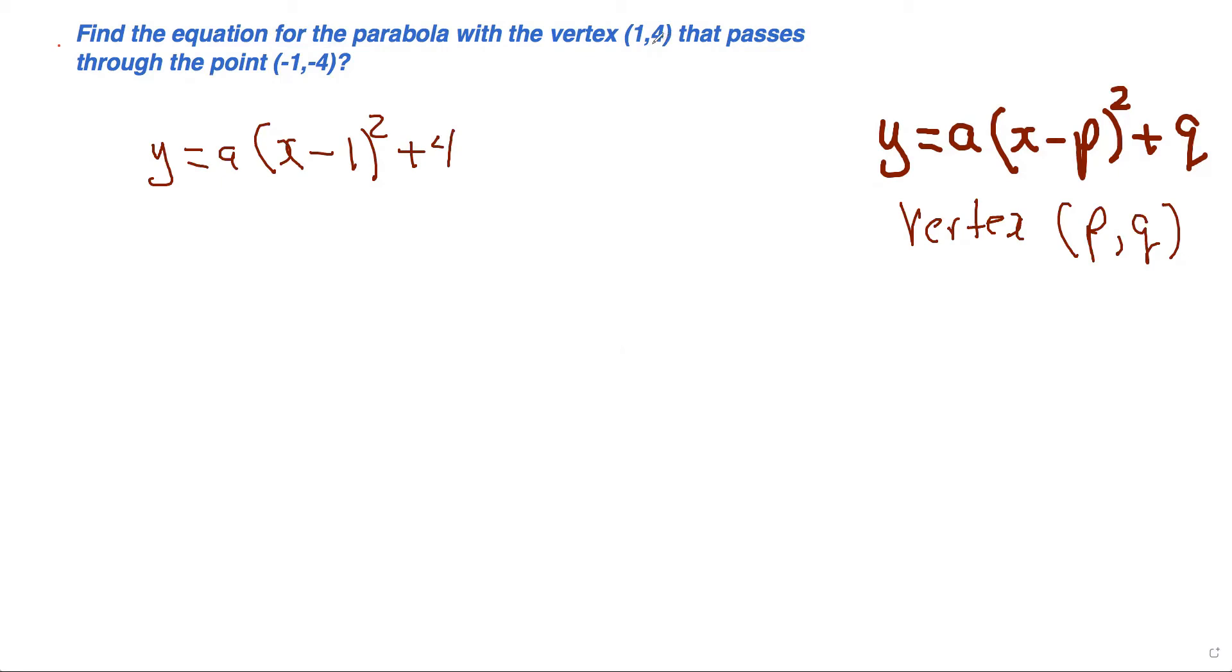When you plug in the vertex, that 1 becomes minus 1 because that's what the equation form requires. Now use the point (-1,-4) for x and y to solve for a, and that's what you're trying to look for.